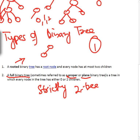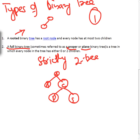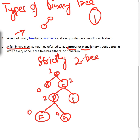For example: node A has children B and C; C has children D and E; D has children F and G. Looking at each node — A has two children, B has zero, C has two, D has two, E has zero, F has zero, G has zero. Every node has either zero or two children. This is a strictly binary tree, also called a full binary tree or two-tree.